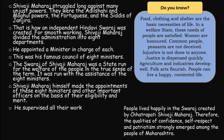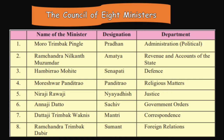People lived happily in the Swaraj created by Chhatrapati Shivaji Maharaj. Therefore, the qualities of confidence, self-respect, and patriotism emerged among the people of Maharashtra. The council of eight ministers: first, Mortrimbak Pingle, designation Pradhan, department Administration and Political. Second, Ramchandra Neelkand Kujunda, designation Amatya, department Revenue.